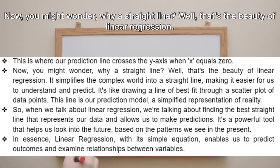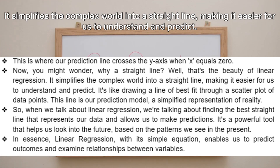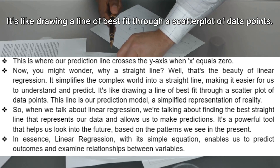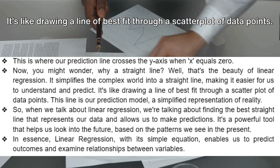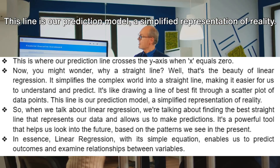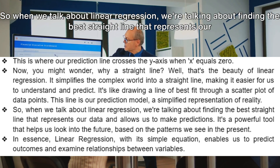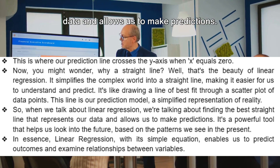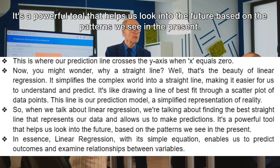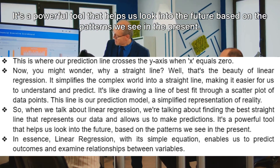Why a straight line? That's the beauty of linear regression — it simplifies the complex world into a straight line, making it easier to understand and predict. It's like drawing a line of best fit through a scatterplot of data points. This line is our prediction model, a simplified representation of reality. We're finding the best straight line that represents our data and allows us to make predictions — a powerful tool for looking into the future based on present patterns.